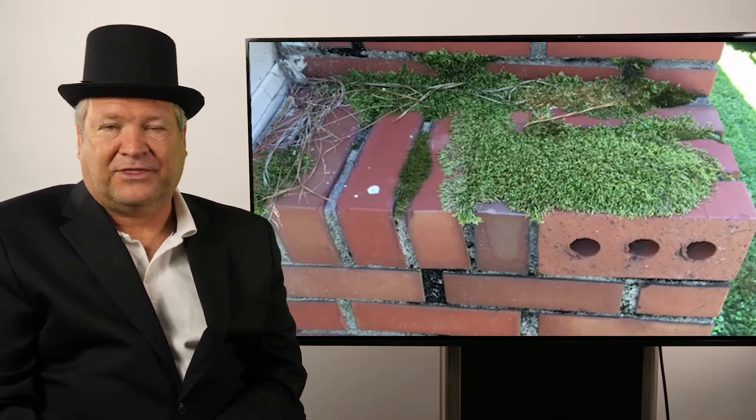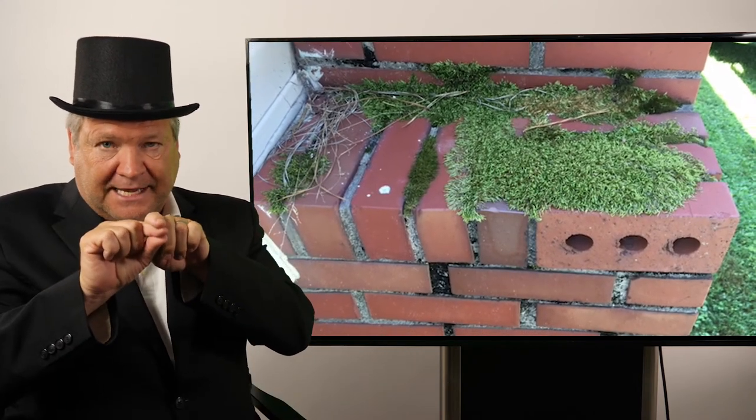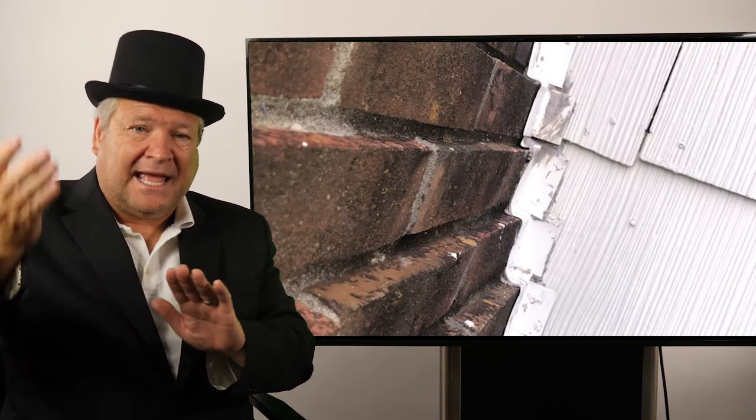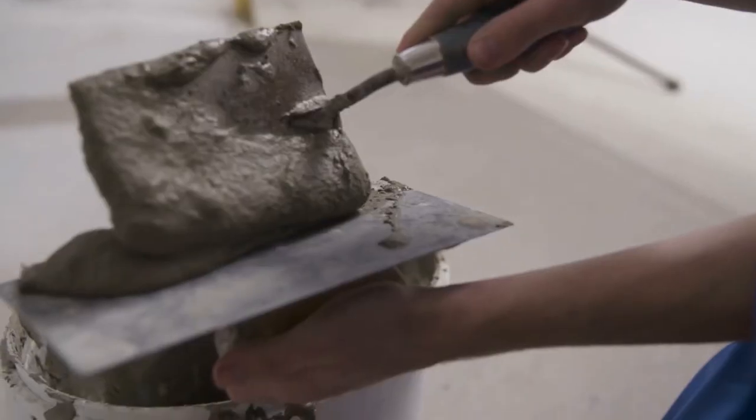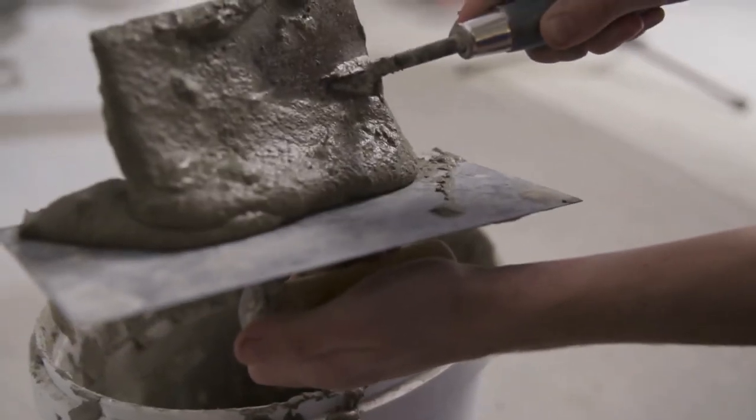The problem with that is sometimes these brick masons will corbel it too much. You're only allowed to corbel it like a third of the brick width or half of the brick height. If he corbels it too much, it allows water to cascade and get inside of it.